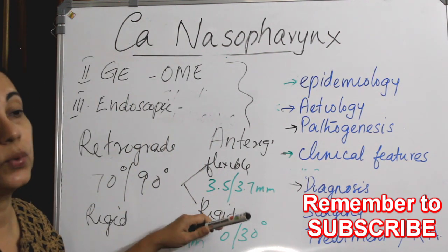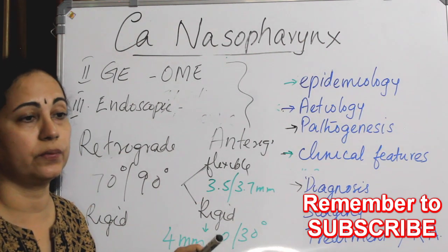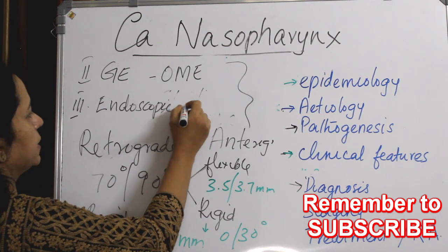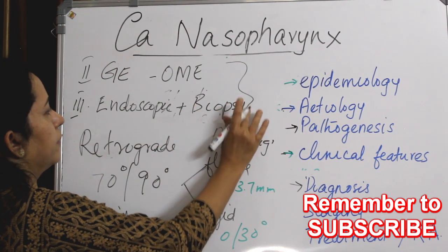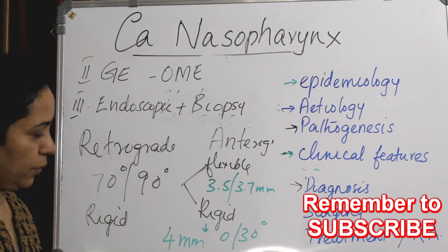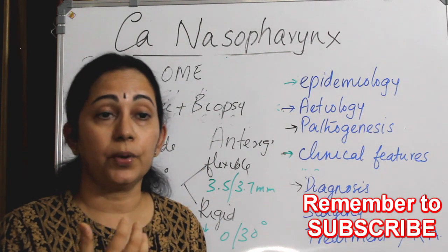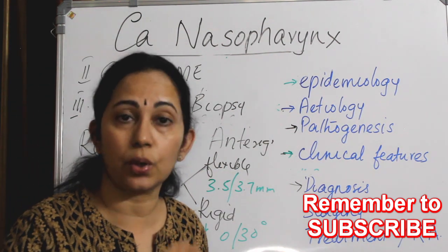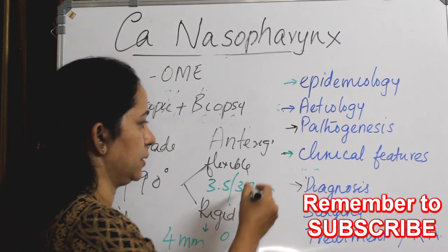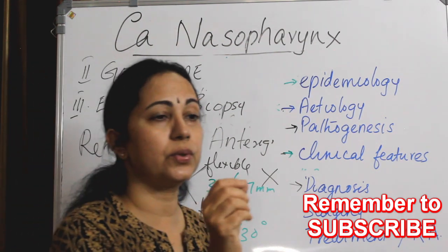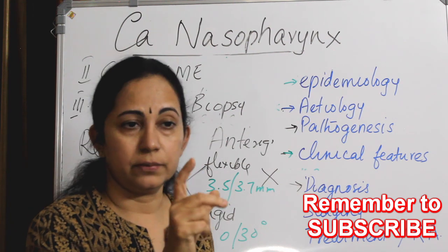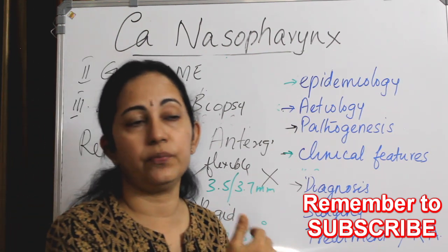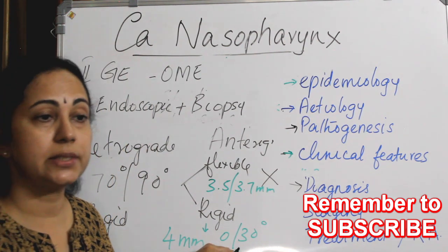You can also take a biopsy during rigid anterograde endoscopy of the nasopharynx. Biopsy using the side channel of a flexible endoscope is not recommended, as it provides only a very small forceps and adequate tissue will not be obtained. It is always better to go with rigid endoscopy for biopsy.